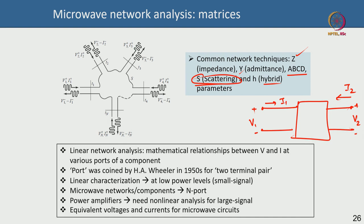We will cover the scattering matrix in the next lecture. To summarize today: there are different matrices — Z, Y, ABCD, S, H — that establish the relationship between input and output for two-port or multi-port microwave networks. S parameters are the most practical because measurement tools use S parameters, for reasons we will discuss in the next lecture.